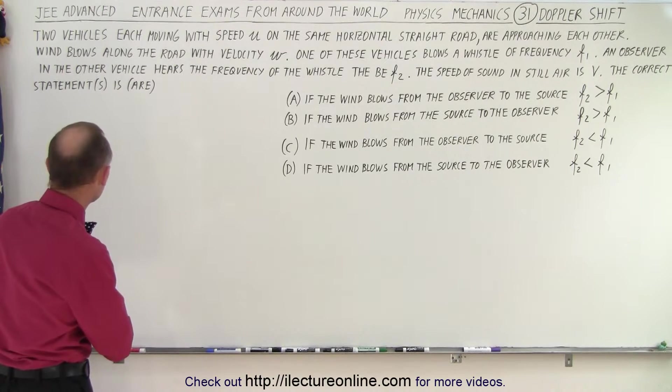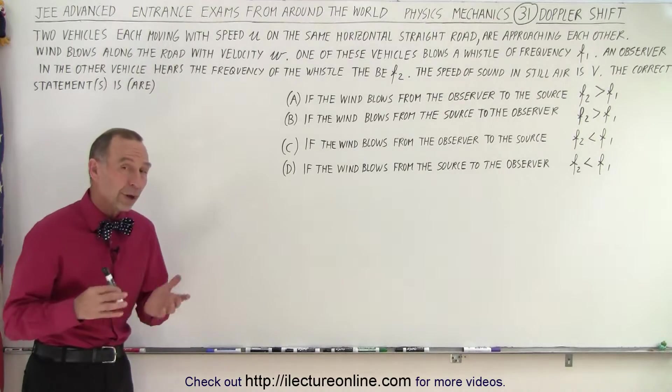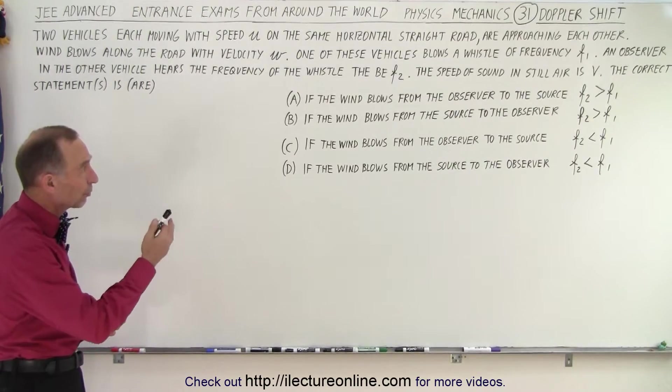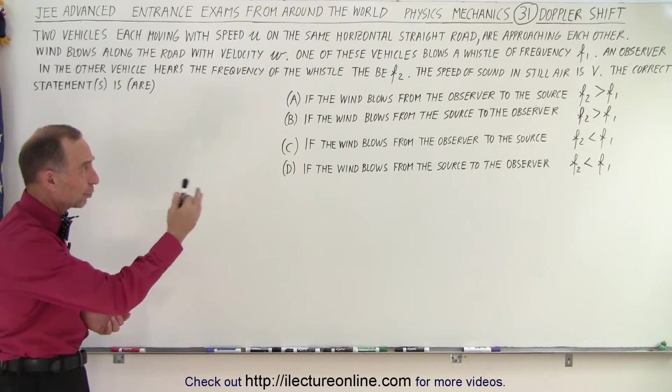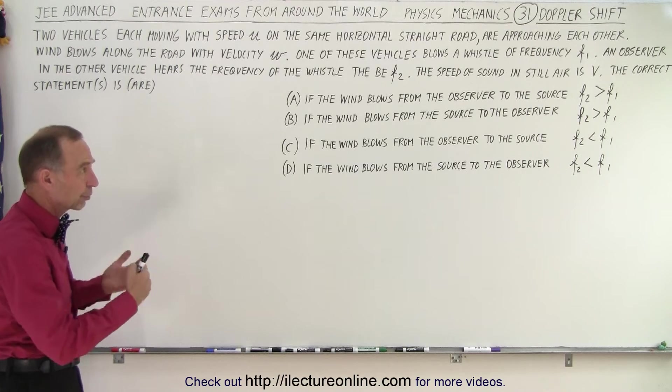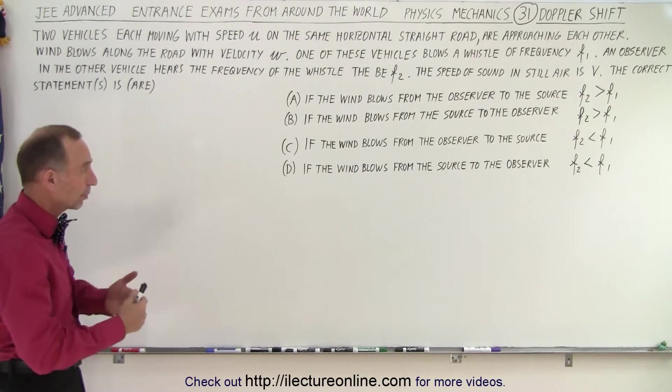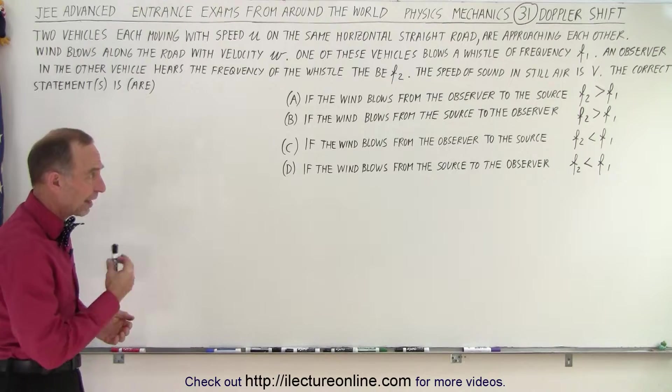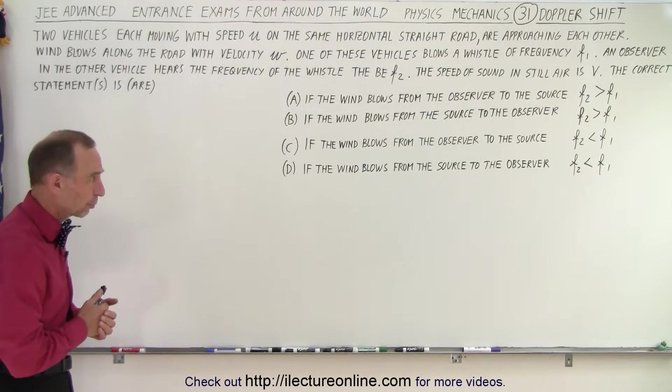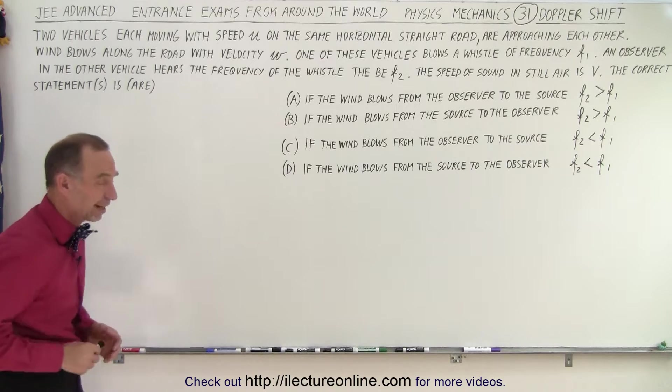The correct statement is or are, because more than one of these statements could be correct. They say if the wind blows from the observer to the source then f2 is greater than f1, or if the wind blows from the source to the observer then f2 is greater than f1, or they turn it around: if the wind blows from the observer to the source f2 is smaller than f1, or if the wind blows from the source to the observer then f2 is smaller than f1.